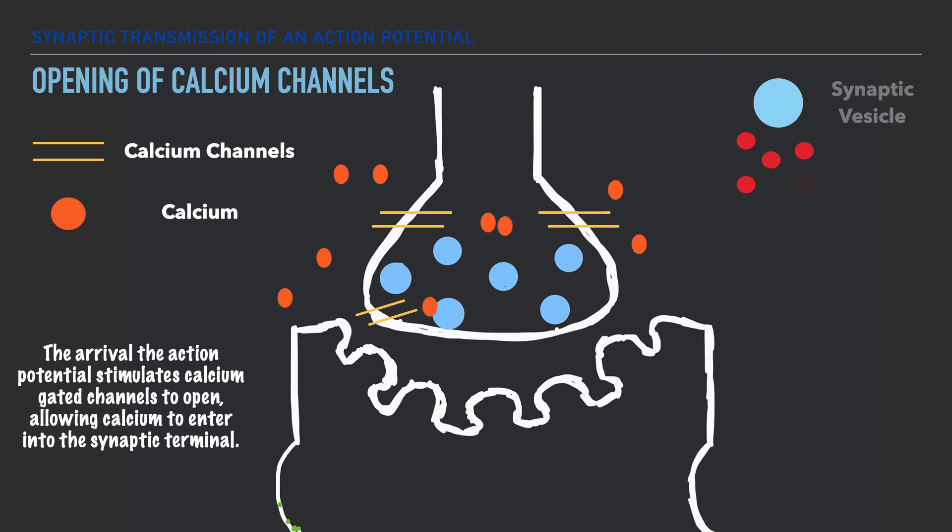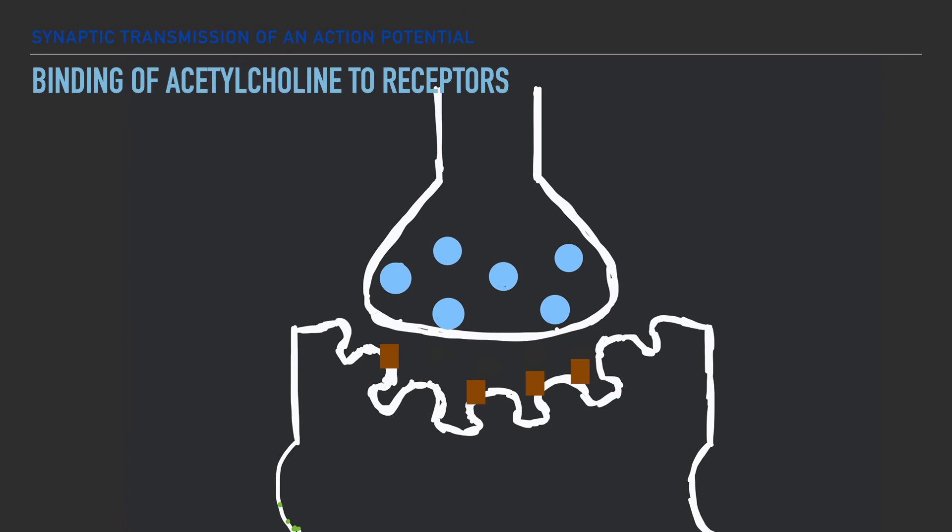the neurotransmitter is now within the synaptic cleft. The released neurotransmitters then bind to the targeted cell structure. And by doing so, the action potential is allowed to continue its transmission.